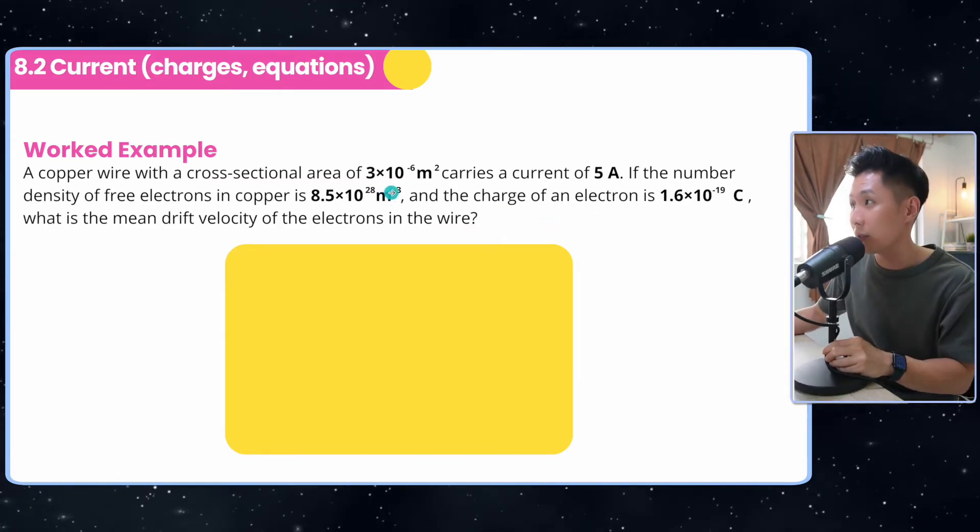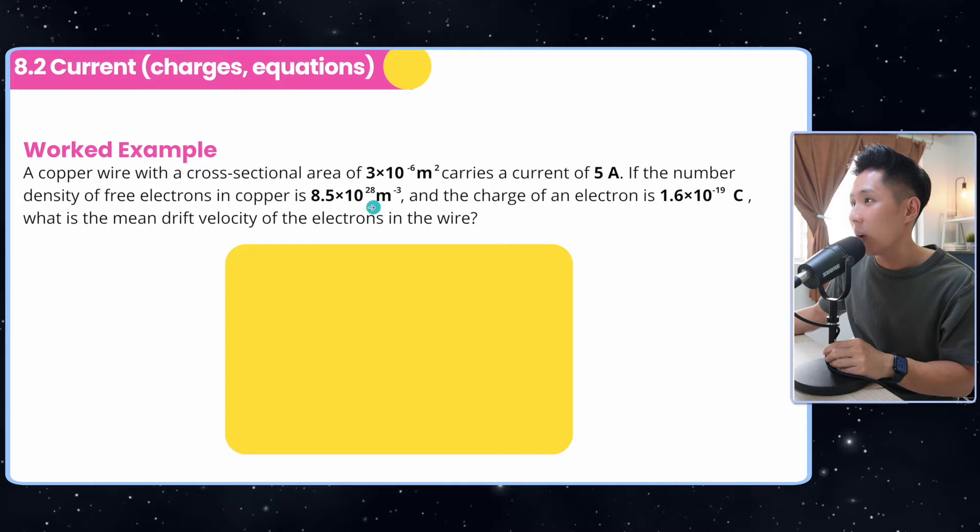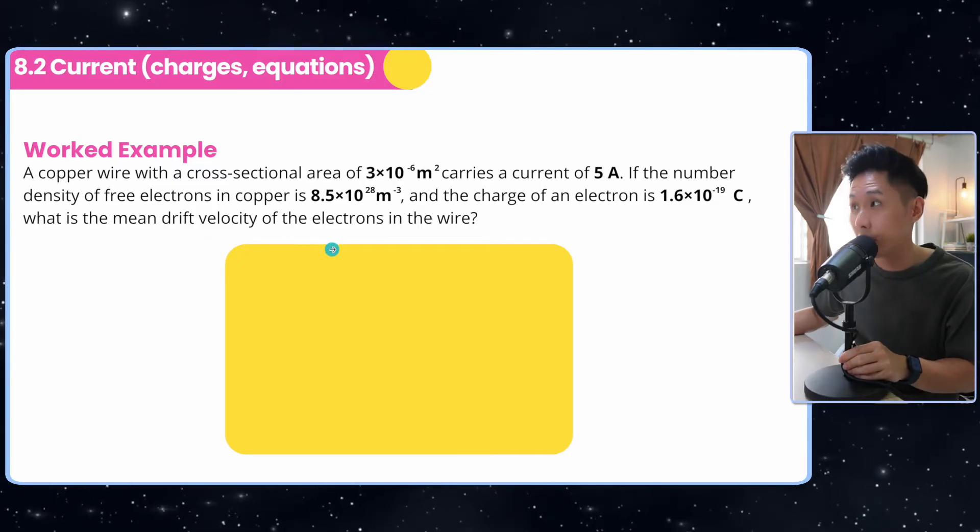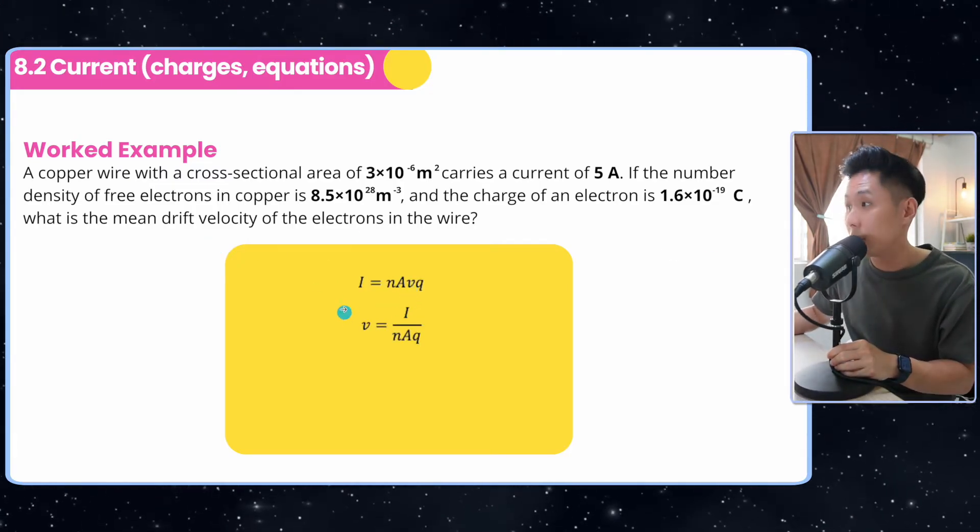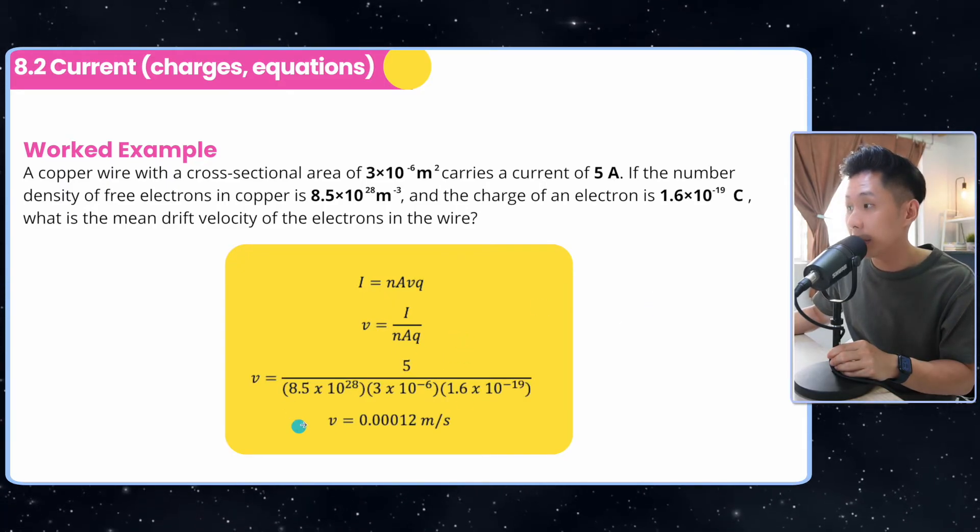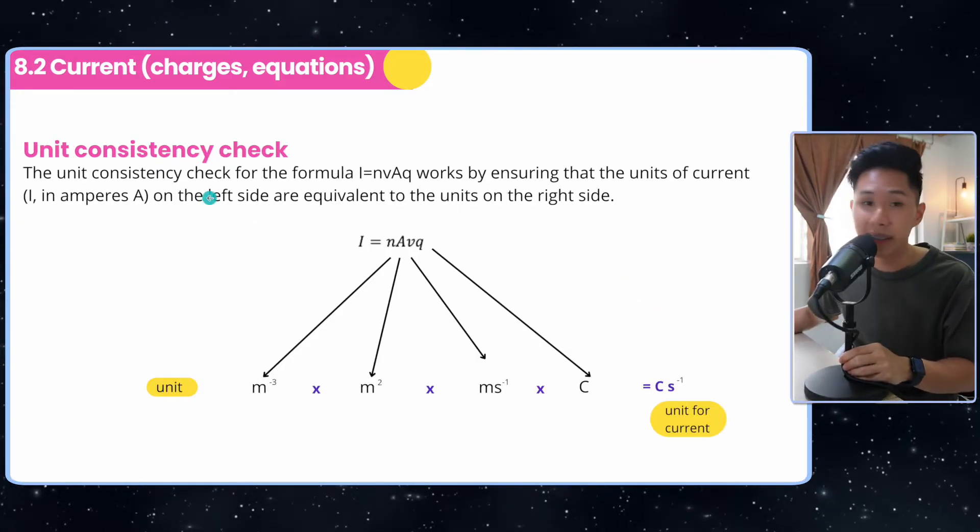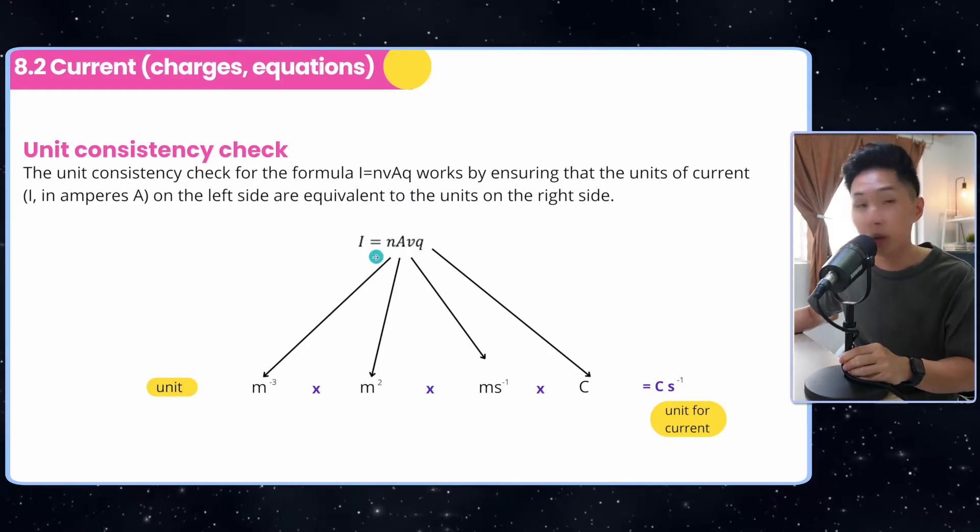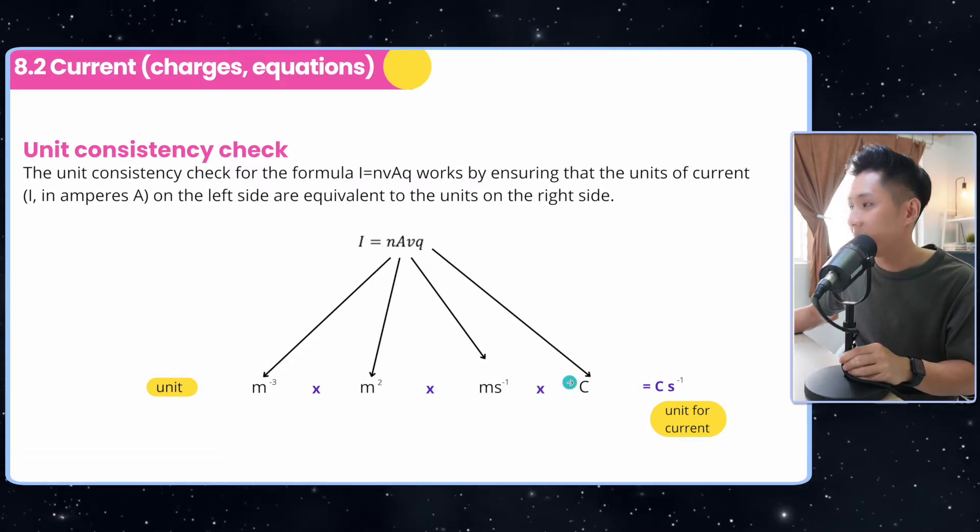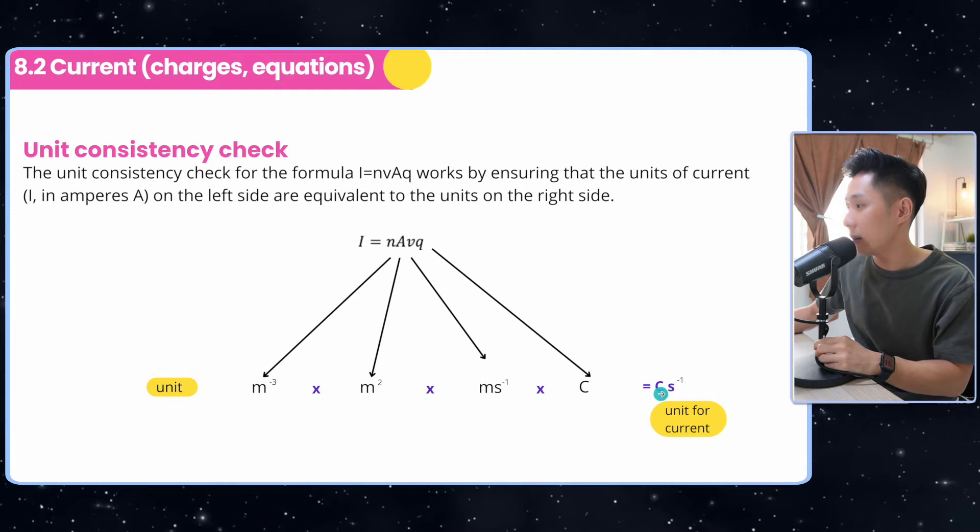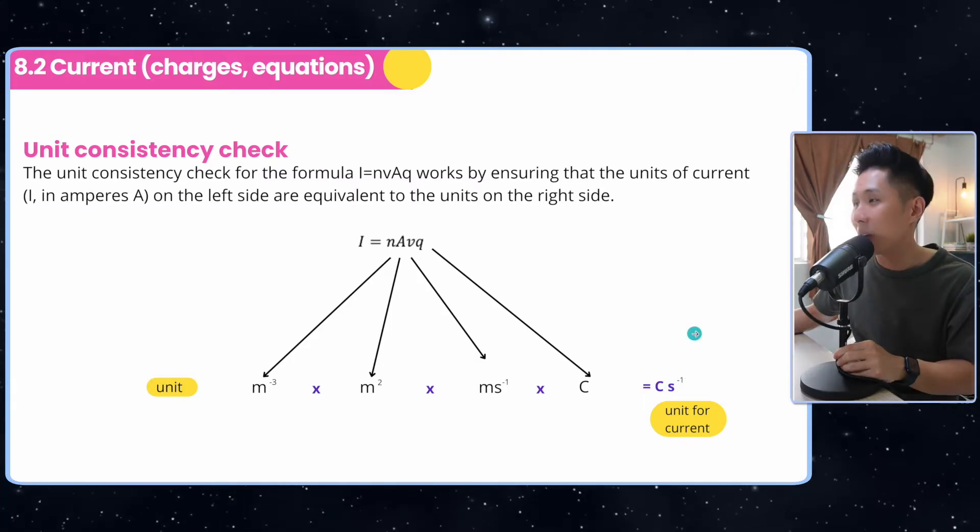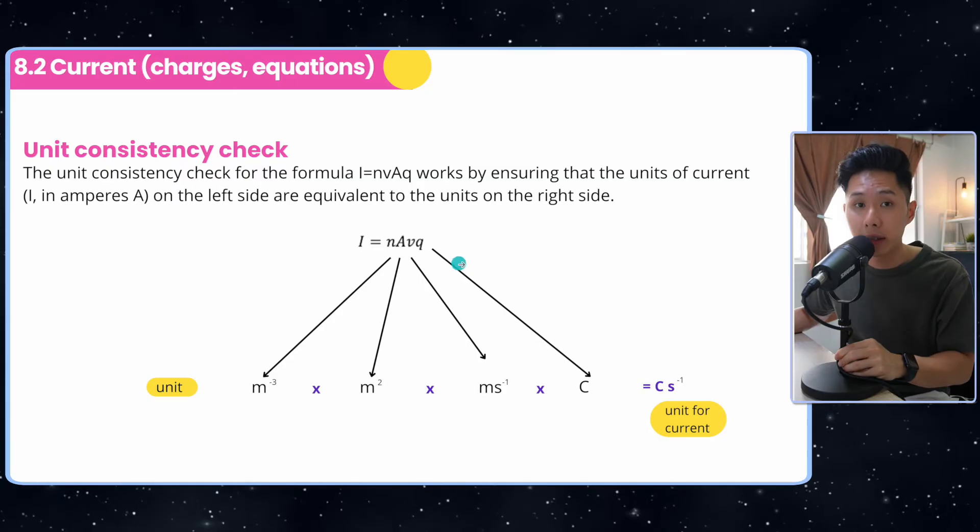Now let's look into a work example. They provide you with the cross-sectional area. What's the current? What's the number density? What's the charge? And they want to know what's the mean drift velocity of the electrons. So again, you already know the formula. You just make velocity the subject, and substitute the relevant value, and you would have gotten the mean drift velocity of the electrons. So you can also do a unit consistency to check whether this formula is indeed equal to current. So just break it down into unit for each quantity, and multiply them together. You will find out that the unit for current is C per second, the amount of charge per second, which is exactly what we want current to be. So that's how to prove that this formula is indeed the correct one.